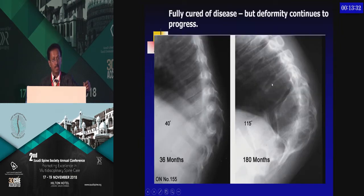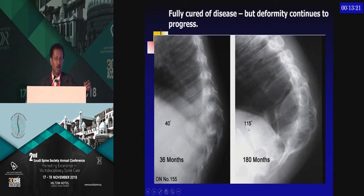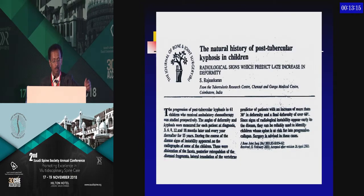This is a perfect example. This child has been cured of spinal tuberculosis and has a 40-degree kyphosis. But then, 15 years later, ends up with 115 degrees kyphosis — not because of the disease, but because of the growth modulation due to the deformity.